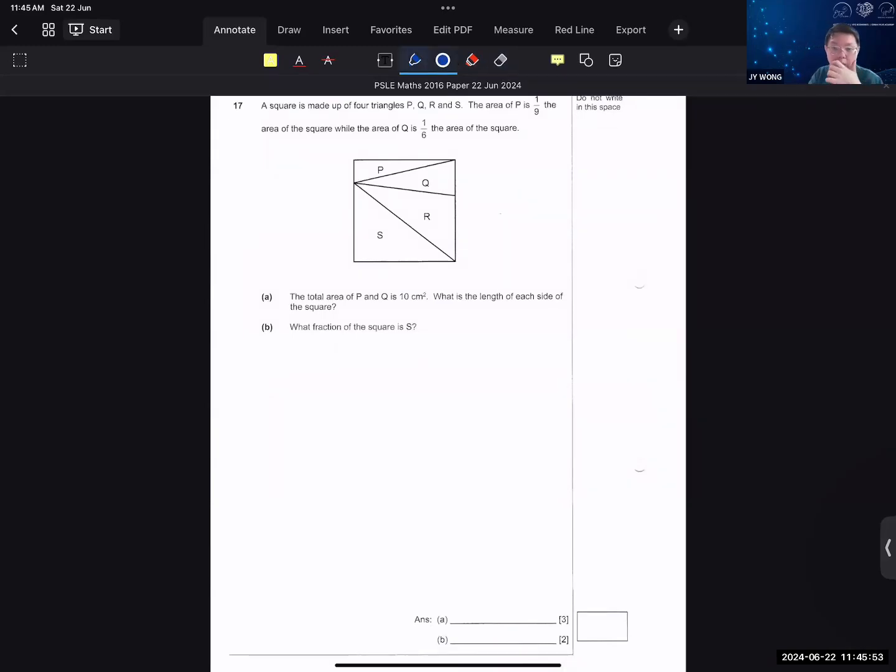You might have seen question 17 before. 17 is actually not a difficult question, but a lot of students struggled with that question that year. 17A is 6 cm. 17B is 7 out of 18.